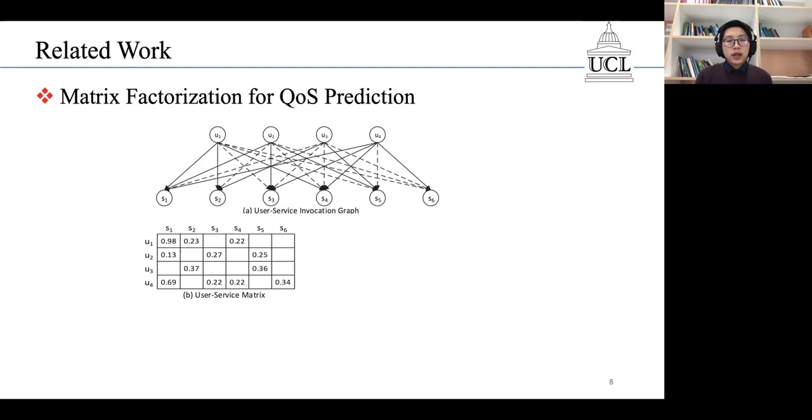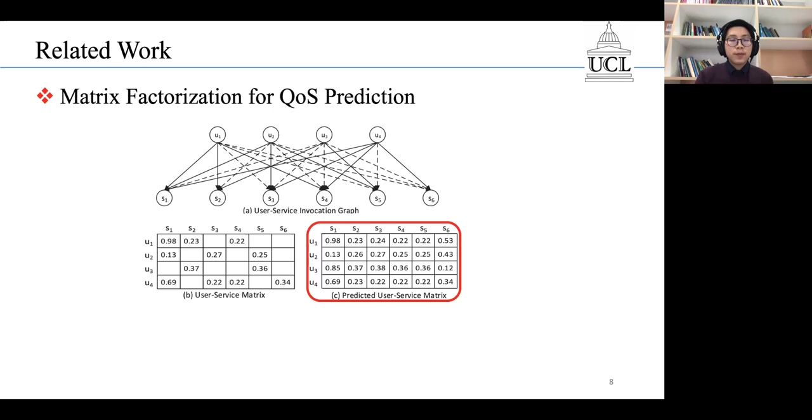As you can see, there are many blank cells in this matrix, so the task of QoS prediction is to fill in these blank cells.